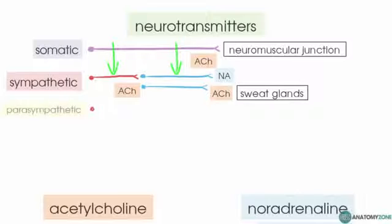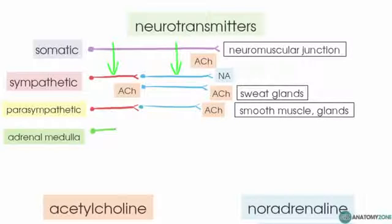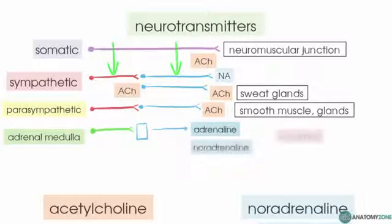In the parasympathetic nervous system, the post-ganglionic neuron secretes acetylcholine. The adrenal medulla is directly innervated by the pre-ganglionic neurons of the sympathetic nervous system — a pre-ganglionic sympathetic nerve fibre directly innervates the adrenal medulla, which then releases adrenaline and noradrenaline directly into the circulation.